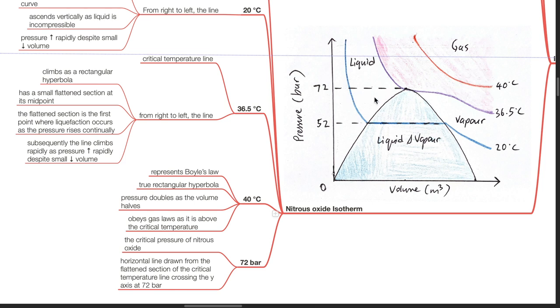72 bar is the critical pressure of nitrous oxide. In fact, a horizontal line drawn from the flattened section of the critical temperature line crossing the y-axis at 72 bar.